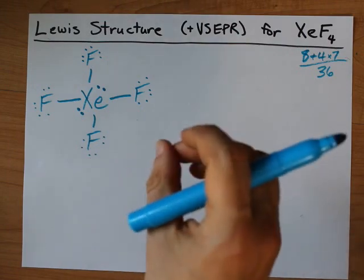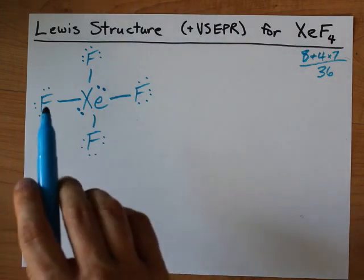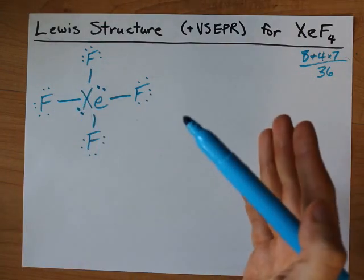Alright. Here, xenon has an expanded octet. Each of the fluorines is single bonded, as they like to be, and xenon has two lone pairs on it.